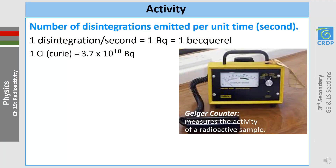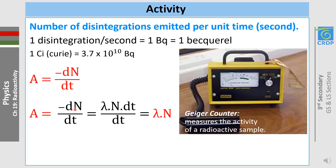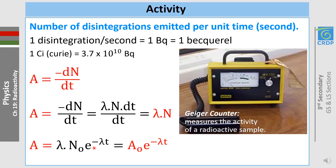Activity is the number of disintegrations per unit time. One disintegration per second equals one becquerel (Bq), named after Becquerel. One curie equals 3.7 × 10¹⁰ becquerel. A device that measures activity is the Geiger counter. Activity A = −dN/dt = λN, and substituting N = N₀ · e^(−λt), we obtain A = A₀ · e^(−λt).